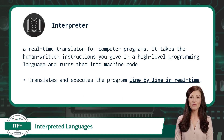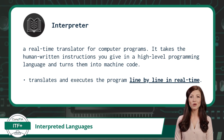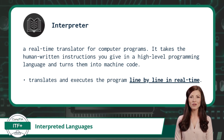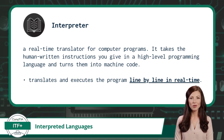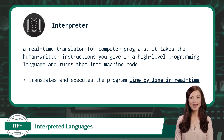This video will focus on another subset of high-level programming languages called interpreted languages. To begin understanding what an interpreted language is, you first need a definition for an interpreter. An interpreter is a real-time translator for computer programs. It takes the human-written instructions you give in a high-level programming language and turns them into machine code. The interpreter translates and executes the program line by line, in real-time.